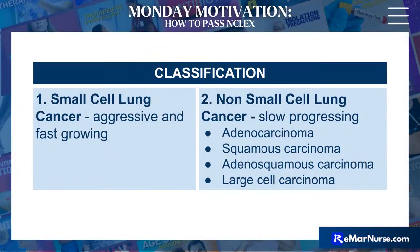There are two types of lung cancer to be mindful of. We have small cell lung cancer, which is aggressive and fast-growing. And then we have non-small cell lung cancer, which is a slower-progressing cancer with many other categories: adenocarcinoma, squamous carcinoma, adenosquamous carcinoma, and large cell carcinoma.